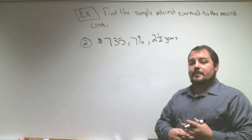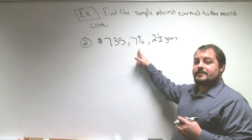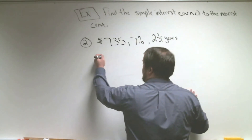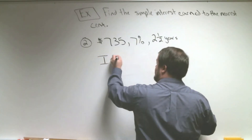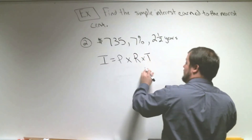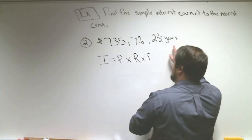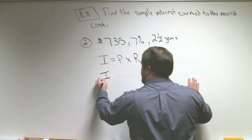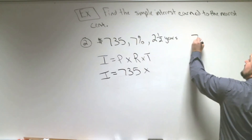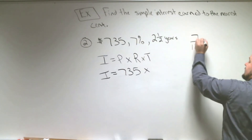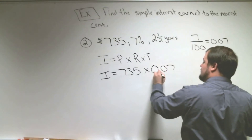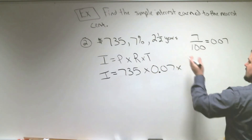In Example 2, we're going to put $735 in the bank with a 7% interest rate, and it's going to be in the bank for two and a half years. Our simple interest formula is: interest equals principal times rate times time. Rate has to be a decimal and time has to be in years. Our interest equals $735 times our rate — 7 divided by 100 gives us 0.07 — so we multiply by 0.07, and then by two and a half years.